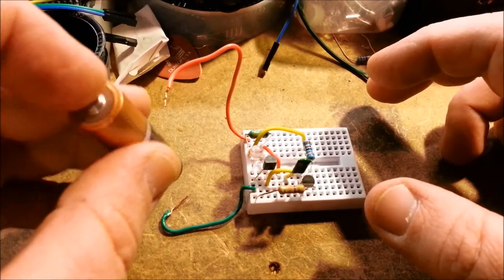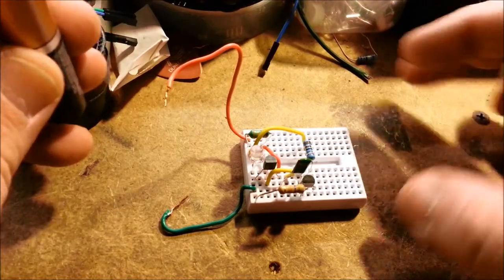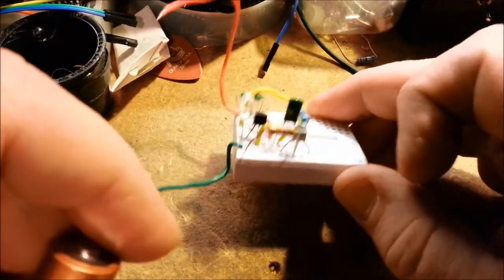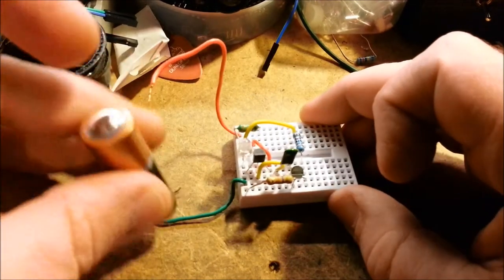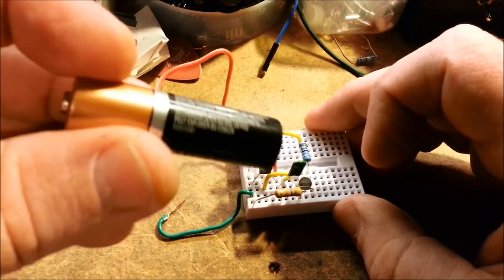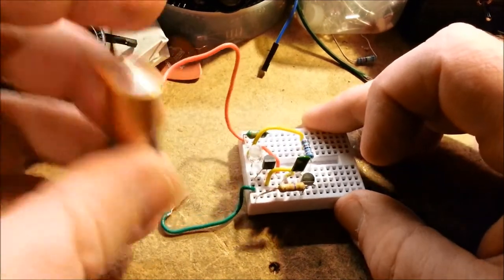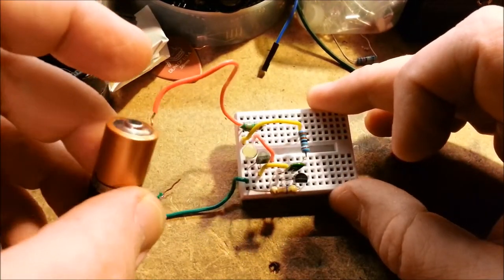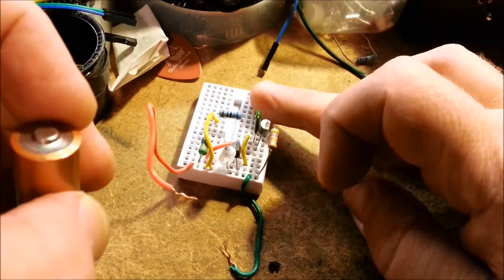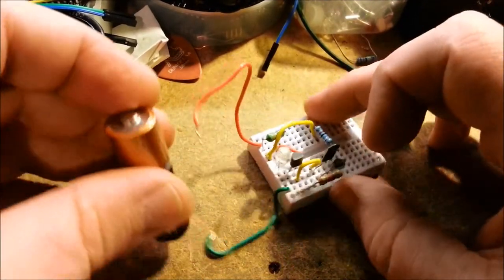Hey, I want to do a quick video on the Joule Thief circuit. It's a simple two-transistor circuit that will allow you to power an LED with just 1.5 volts, which is really cool and handy in applications where you need lower power consumption.